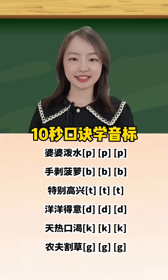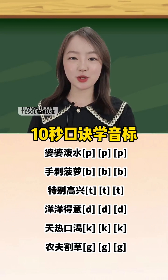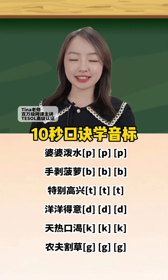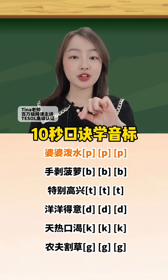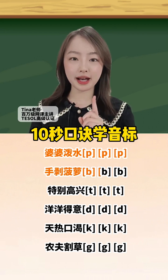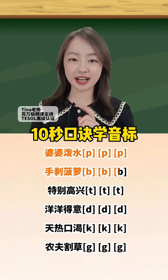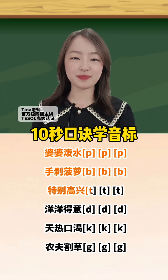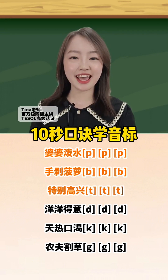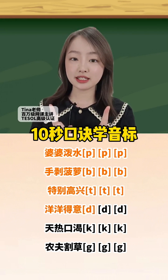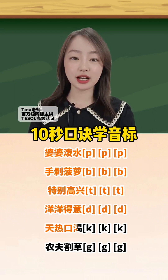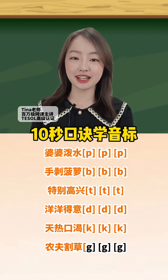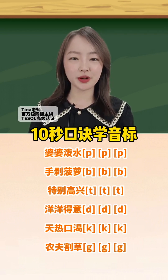学会了给老师一颗小星星吧。口诀十秒搞定爆破音：婆婆泼水，手拨菠萝，特别高兴，洋洋得意，天热口渴，农夫割草。你都学会了吗？